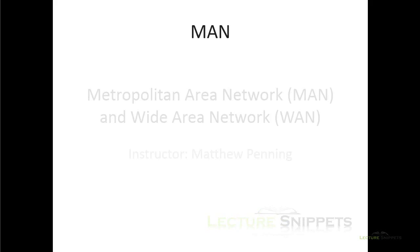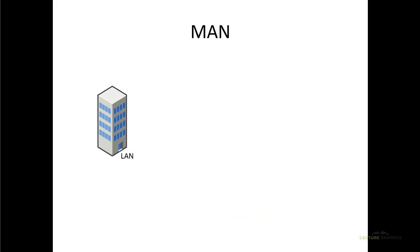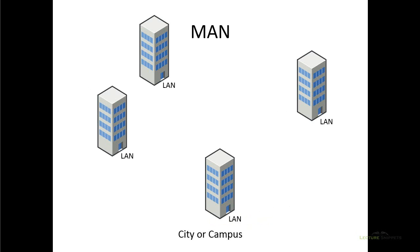Let's begin by looking at MANs. In the past two videos of this course, we've talked about local area networks, LANs, and how they're confined to a building. We want to take this network and expand it to another office or building that we may own and establish a network between these different locations. If we do this within a geographical area such as within a city or within 30 miles, it's typically going to be called a metropolitan area network.